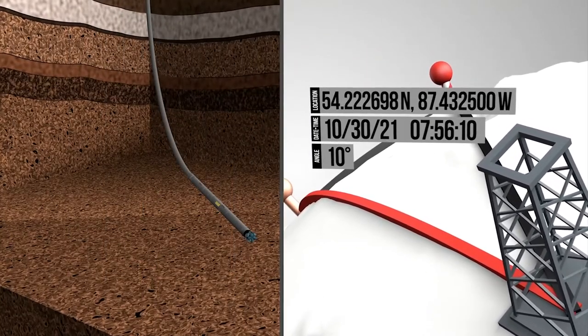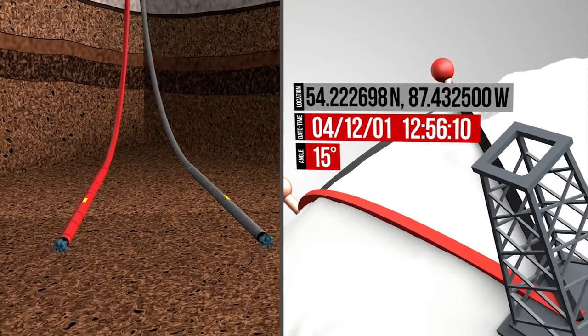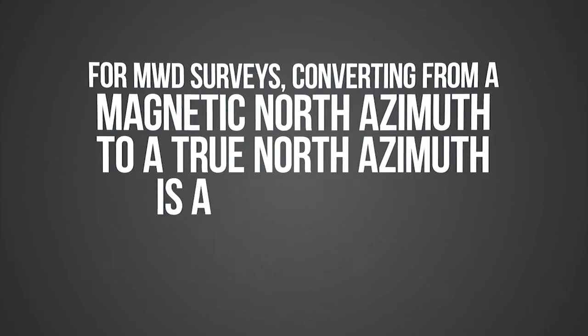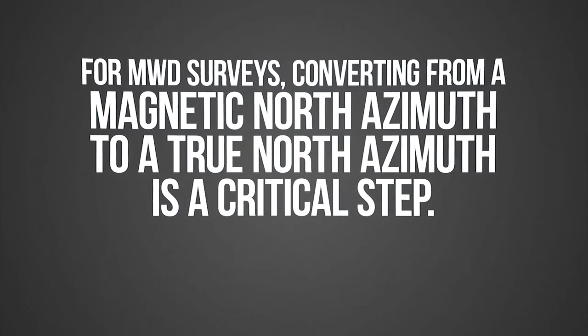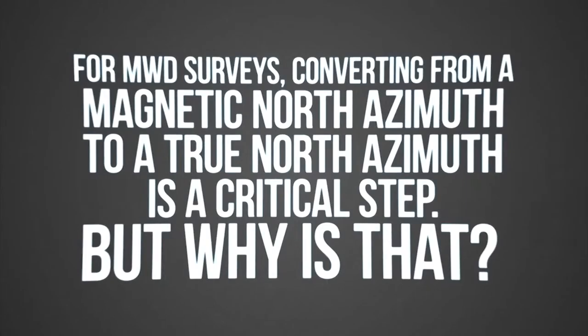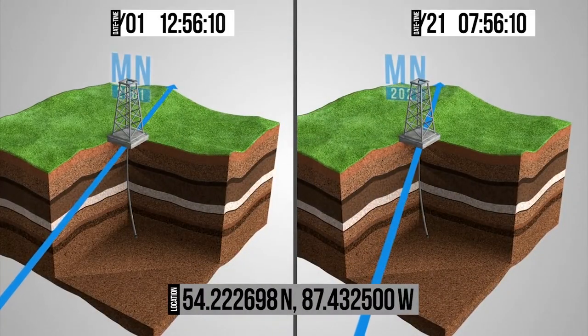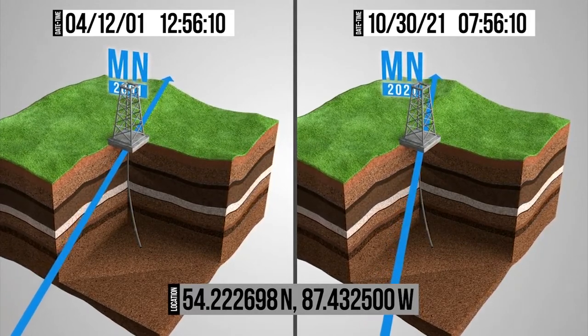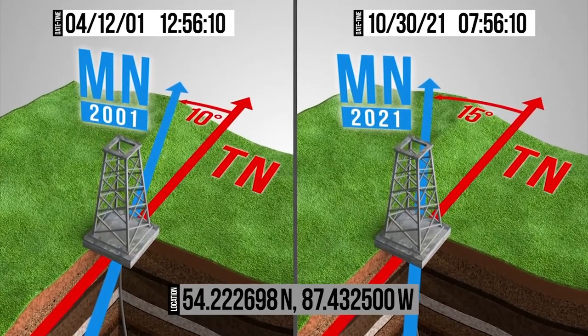This can lead to significant wellbore placement blunders if not done properly. For MWD surveys, converting from a magnetic north azimuth to a true north azimuth is a critical step. But why is that? Well, we never want to reference only magnetic north for MWD surveys because the Earth's magnetic field migrates over time, whereas true north is constant.